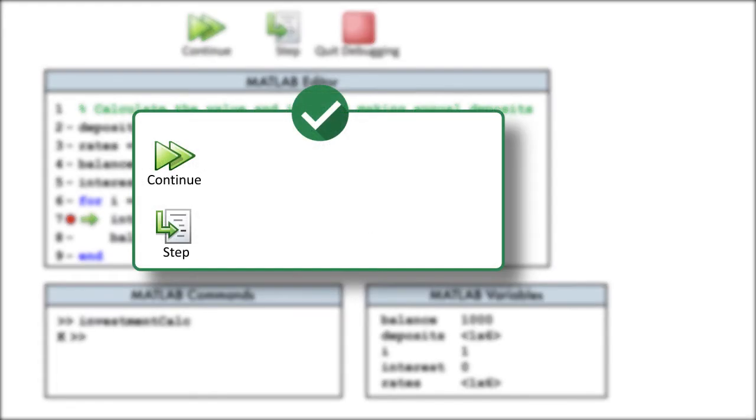We have two options for continuing code execution. We could use the continue button to resume execution until another breakpoint is reached, an error occurs, or the code runs to completion.